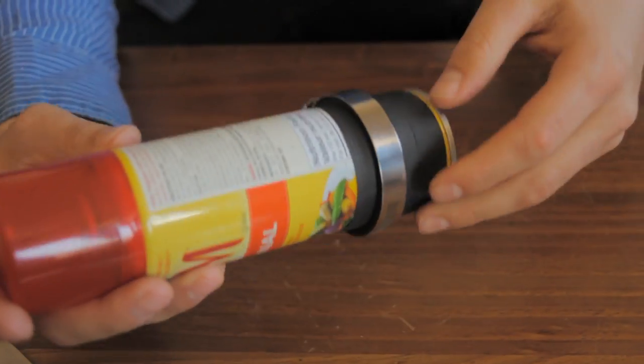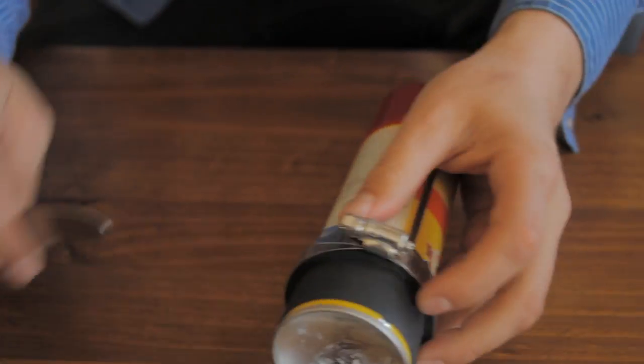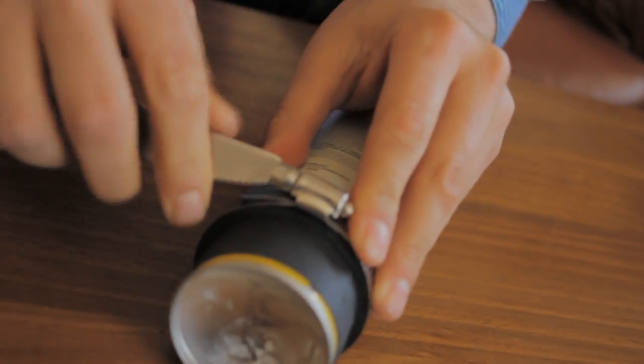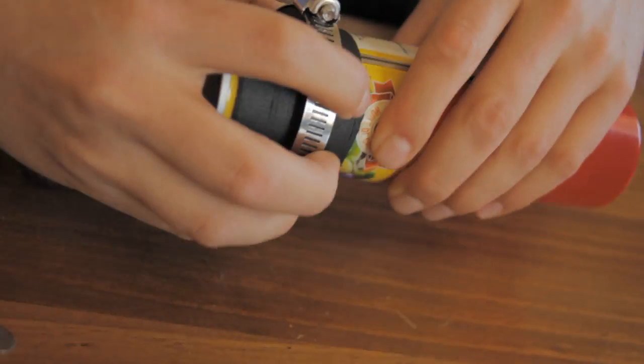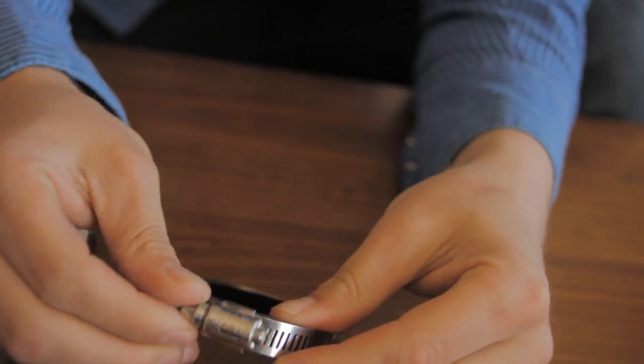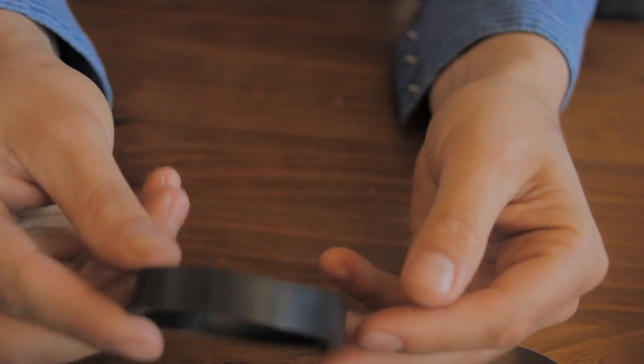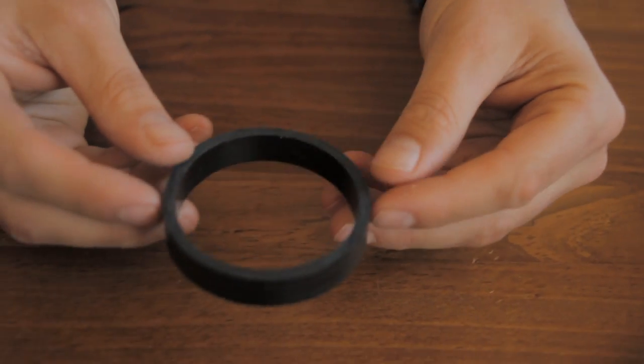So what you should be left with is a perfectly round ring. Pop that off. And there we have our focus ring.